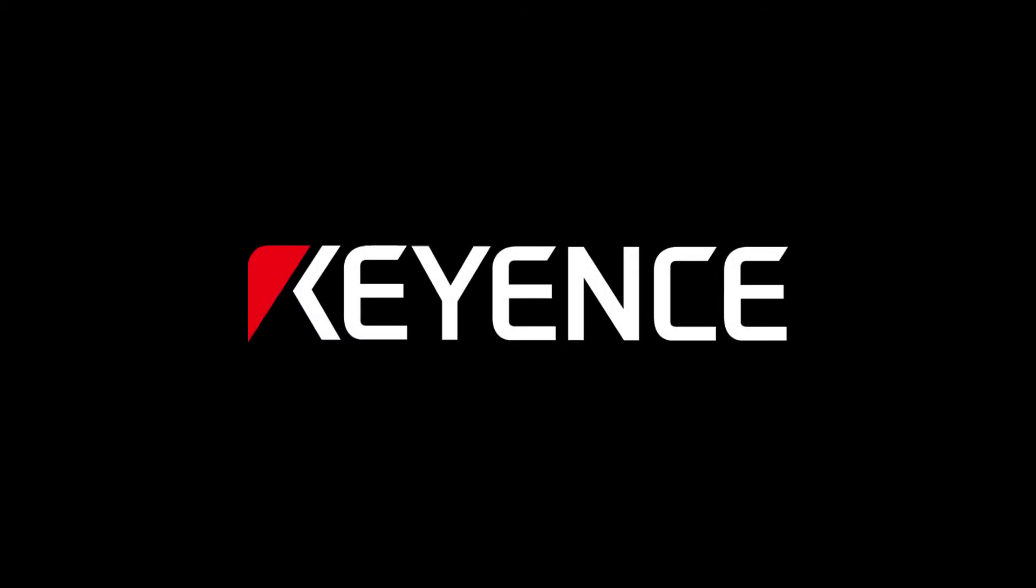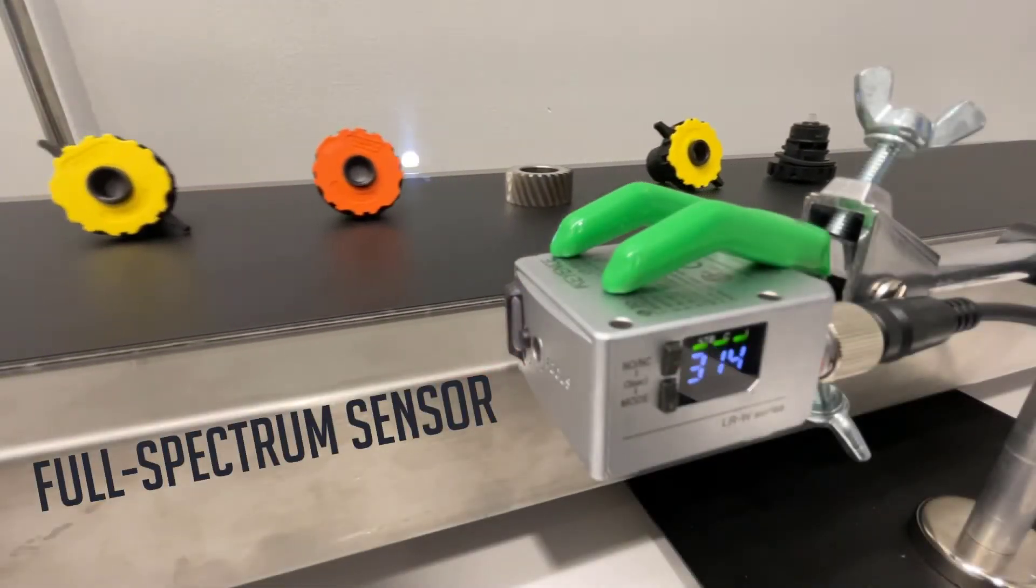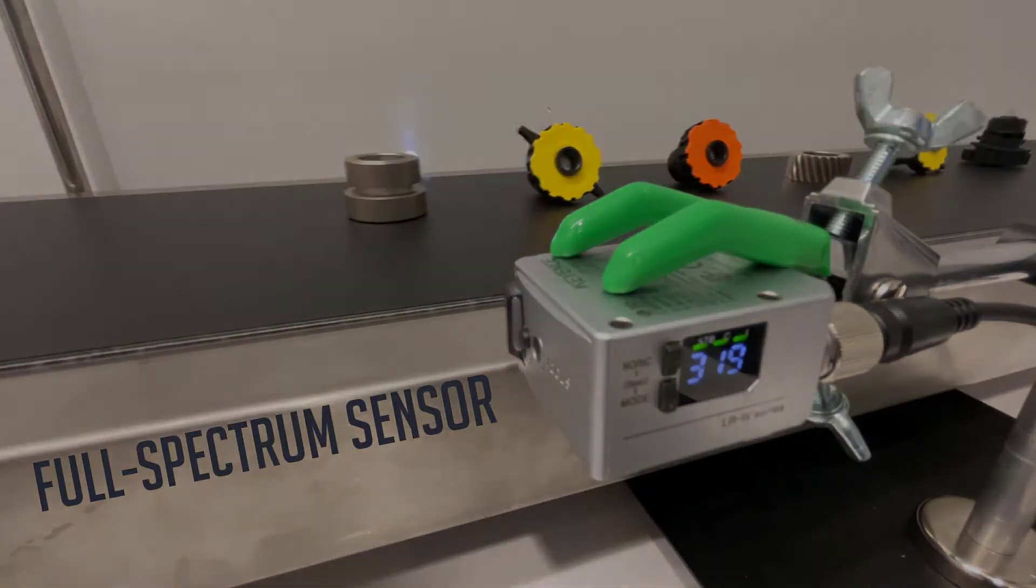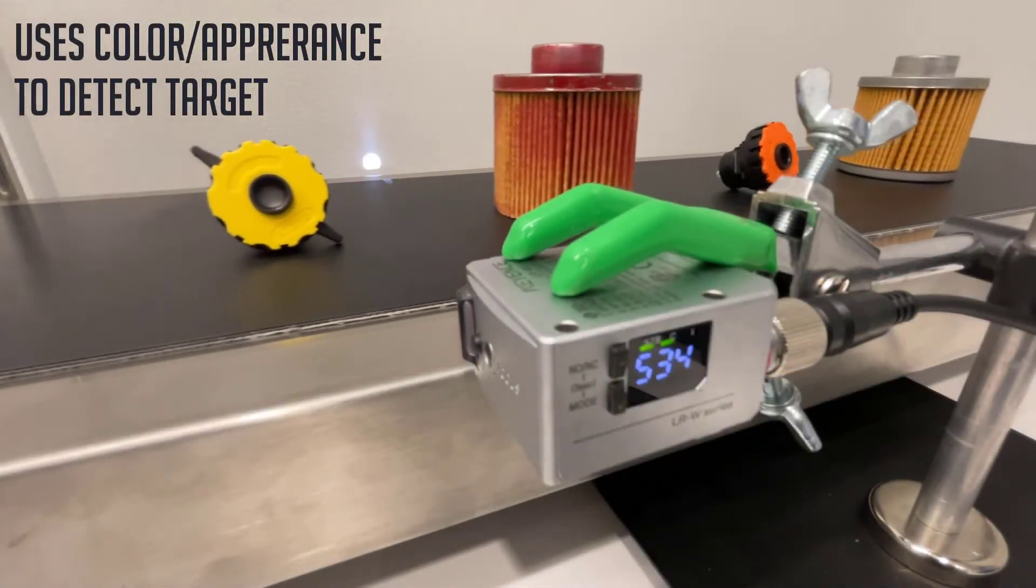This video is going to go through how to set up your LRW sensor for the first time. The LRW is a self-contained full-spectrum sensor that uses a target's color and appearance to judge detection.